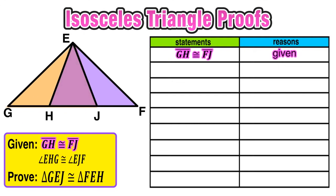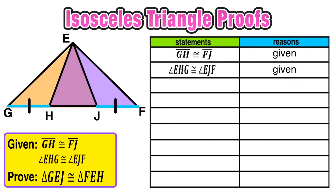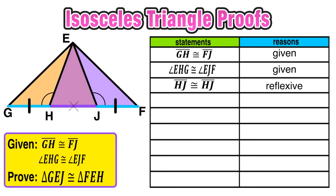Let's start with our first given: GH is congruent to FJ — the reason is given. So segment GH and segment FJ are both the same length and we can mark the diagram accordingly. Our second given is that angle EHG is congruent to angle EJF, so I mark angle EHG and angle EJF the same way to show that they are congruent. Now the givens are out of the way. These two triangles GEJ and FEH are overlapping, and that triangle in the middle — they share in particular segment HJ. So we're going to say that HJ is congruent to itself and our reason is the reflexive property.